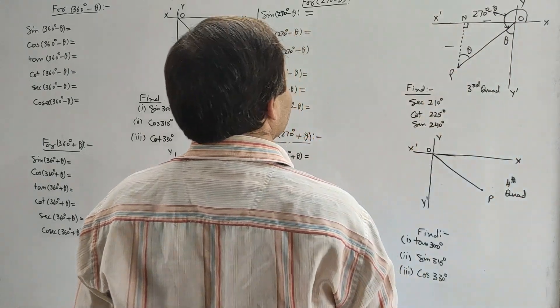Now we determine T-ratios for angle minus θ. Angle minus θ means θ is measured in the clockwise direction. The angle made by rotating line OP with the positive x-axis is minus θ. We can see that minus θ is equivalent to 360° minus θ, because the magnitude of the angle xOP is θ but the sense of rotation is opposite, giving a negative sign. Hence, the angle made by line OP with the positive x-axis in the anticlockwise direction is 360° minus θ. So whatever was true for 360° minus θ is also true for minus θ.